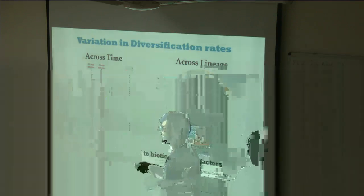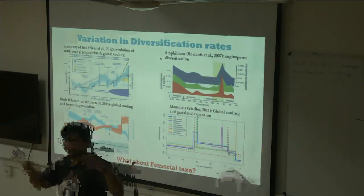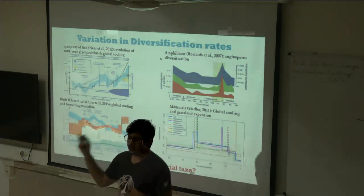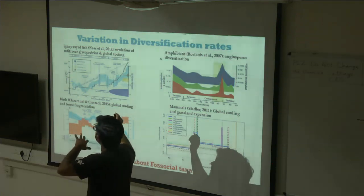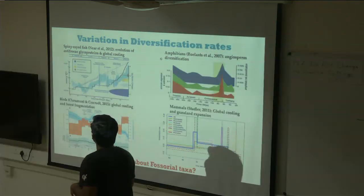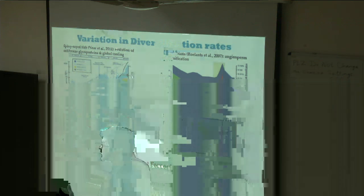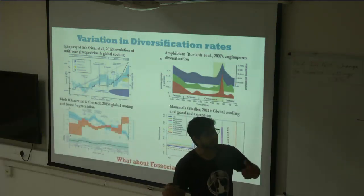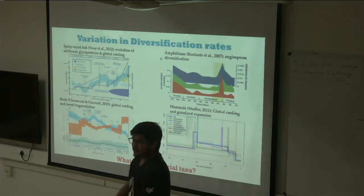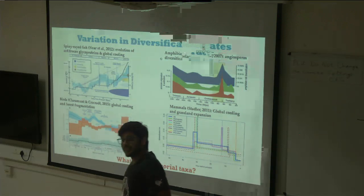There have been many studies on diversification looking at different taxa — mostly terrestrial, arboreal, and aquatic species. For instance, spiny ray fish show a burst of diversification during global cooling events and after the evolution of antifreeze glycoproteins. In amphibians, diversification rates increase with the spread of angiosperms. In birds, rates increase during colder periods and forest fragmentation. In ungulates, diversification is associated with the spread of grasslands. But what about species that live underground?